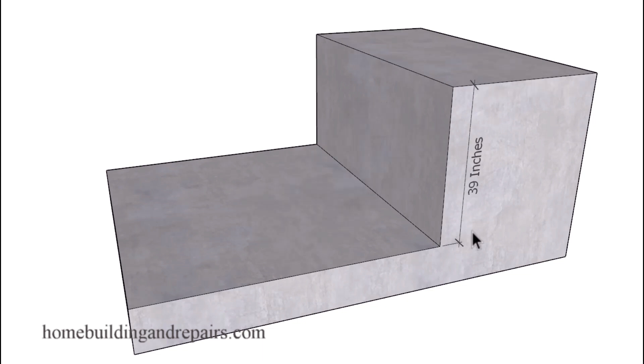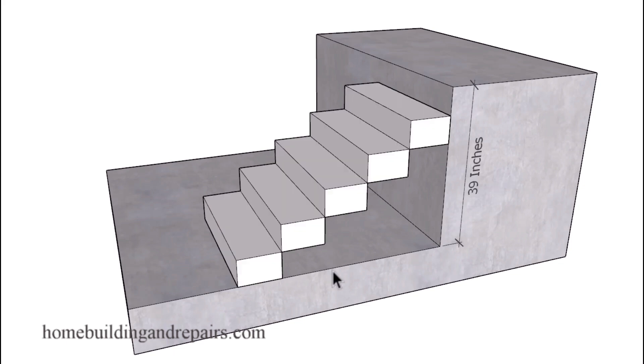You can stop watching the video right now if you understand what I'm talking about. If not, I'm going to provide you with a second total rise number of 39 inches. Again, we can do the same thing. I can divide 7, 7.5, or even 6.5 into 39 inches. That's the beauty of doing it this way. If you would like a specific measurement, you can start with that measurement.